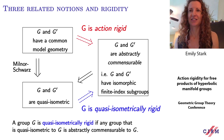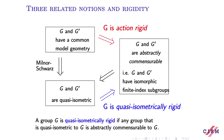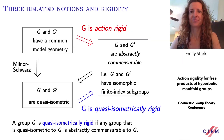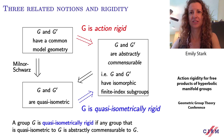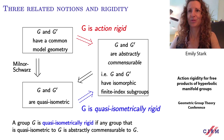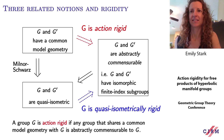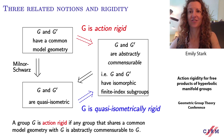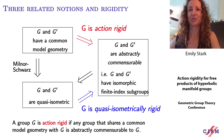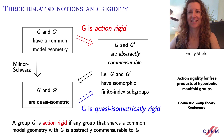Now the two notions of rigidity we're interested in. First, in blue, we say that a group G is quasi-isometrically rigid if any group that is quasi-isometric to G is abstractly commensurable to G. That's the existence of this blue arrow. And in red, we say that a group G is action-rigid if any group that shares a common model geometry with G is abstractly commensurable to G. So in both cases, algebraic information is deduced from geometric information.